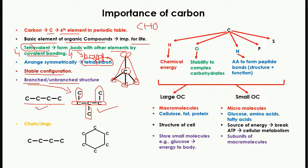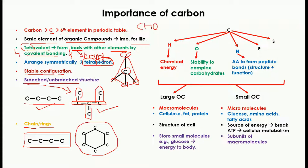These branched or unbranched structures are further arranged in the form of a chain or a ring. This is the chain structure of carbon. However, when this chain structure is arranged in the form of a ring, it forms what is called a ring structure.